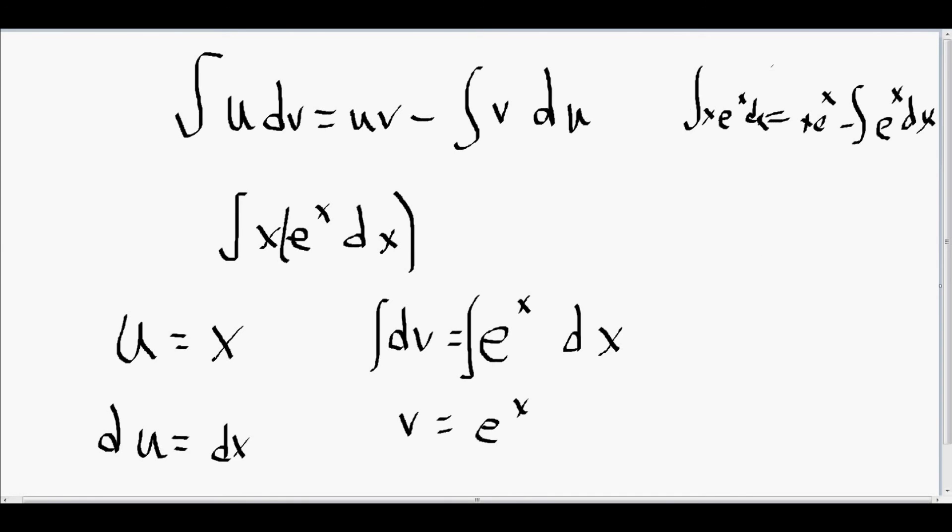Okay, so now we just simplify this part of the formula. So this equals x e to the x minus the integral of e to the x dx. The integral of e to the x dx is just e to the x. So then you just factor out e to the x, so you get x minus one times e to the x.